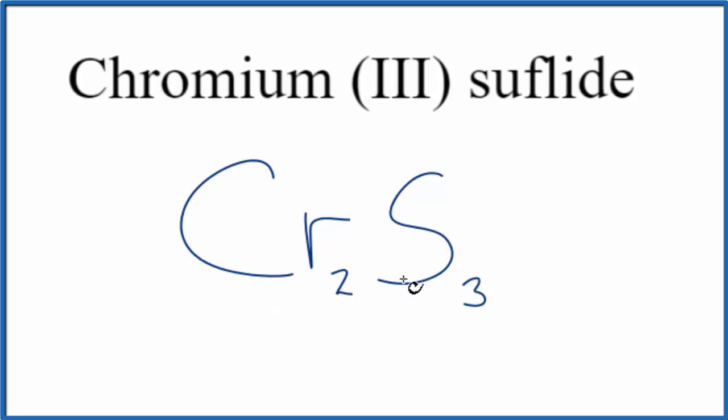Let's check our work though. We said chromium, that's going to be a 3+. And then the sulfur, the sulfide, 2-. 2 times 3+, that's 6+. 3 times 2- is 6-. These two numbers, they add up to 0. So this is the formula for chromium-3 sulfide, Cr2S3.